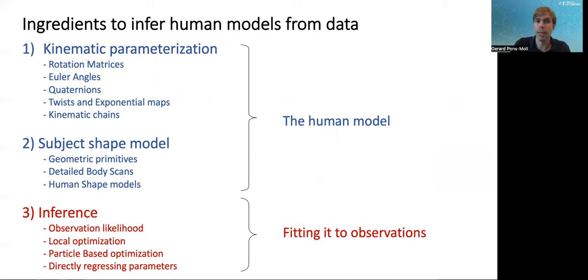The first two are: you have to define how your human model will move. Basically, you have to parameterize some primitives or some surface with a motion model. This is what is called the kinematic parameterization. We're going to see parameterizations exist for rotations, which are very suited for the human body, because you could think of it as a collection of parts that rotate relative to each other.